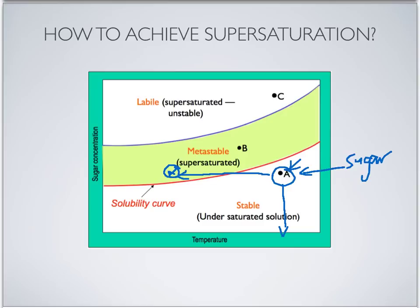The second method to create supersaturation is commonly used in commercial or industrial settings, for example in sugar production. This method involves evaporating the solvent from the solution. Starting at point A with an undersaturated solution, we heat the solution — for example in an evaporator under vacuum. Heating causes the solvent or water to evaporate, which increases the concentration of the solute. This increases the concentration from point A, crossing the solubility line into the supersaturated state.